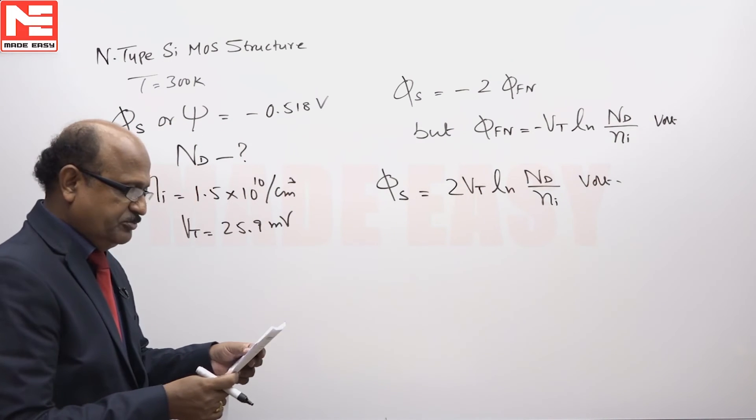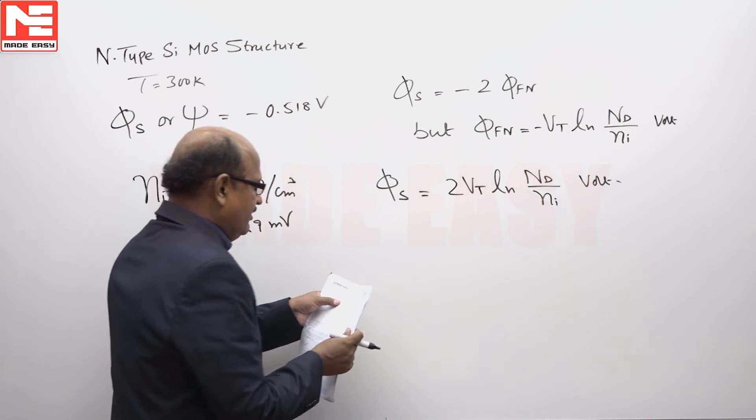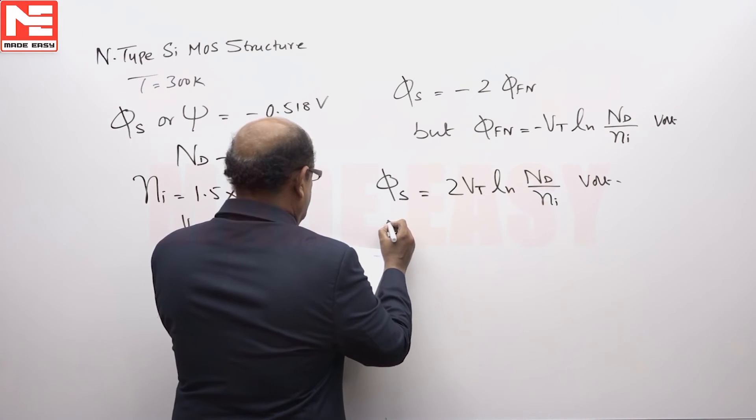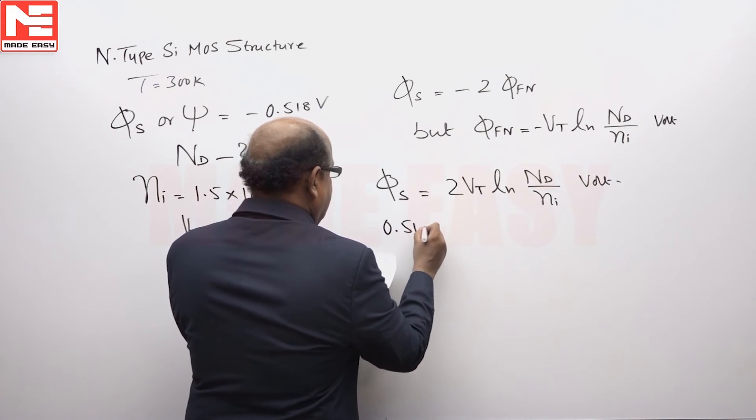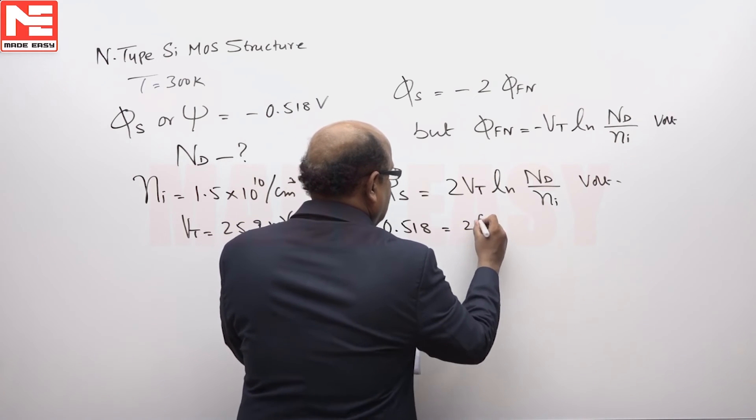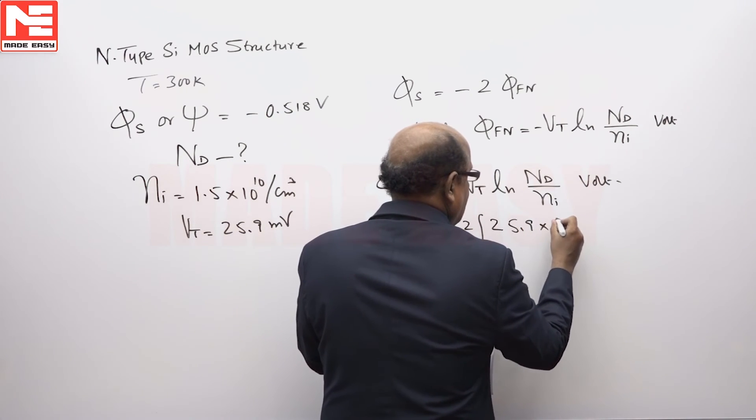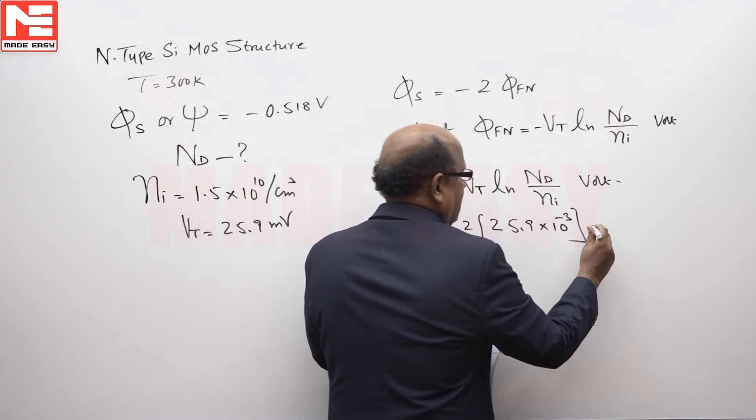So what is the surface potential here? This surface potential will now equal 0.518, that is equal to 2 into 25.9 milli Ln...